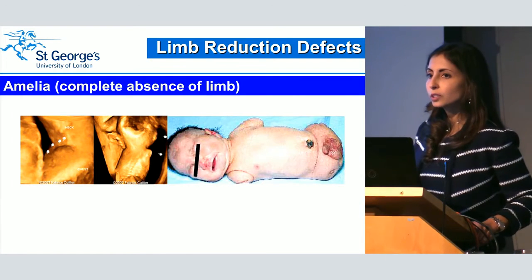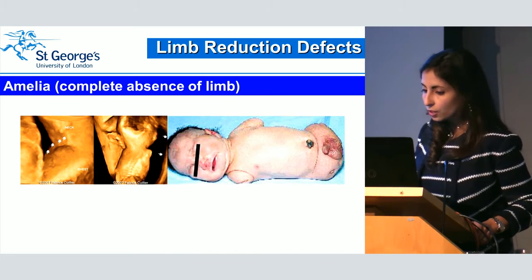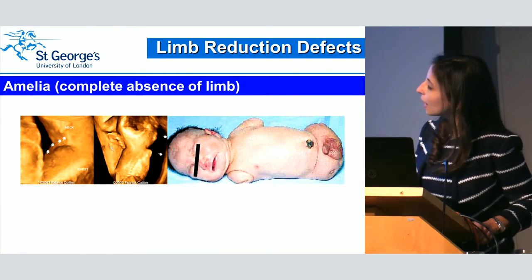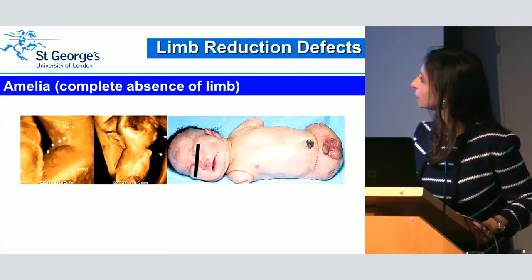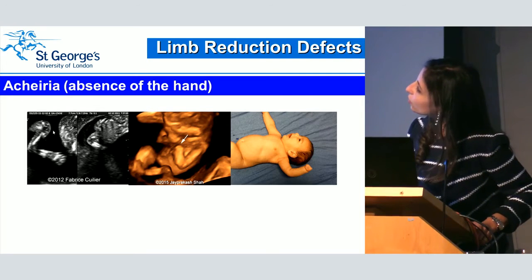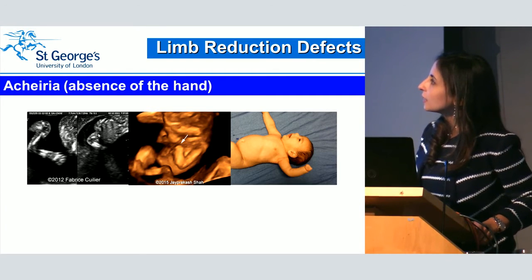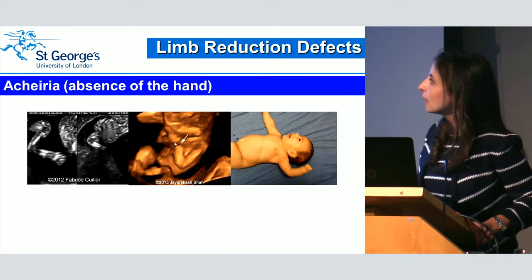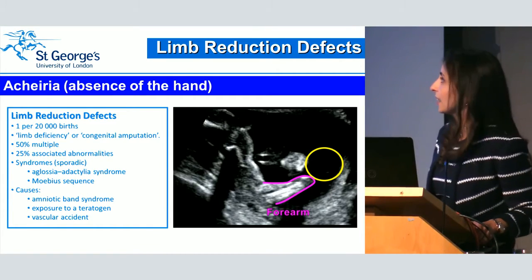Amelia is complete absence of the limb. It's quite rare — only case reports — and often isolated, not associated with syndromes. This is different from acheiria, which is absence of a hand. In 2D you can see one arm with humerus, radius, ulna, and hand on one side, but on the other side you see the humerus and radius/ulna with no hand. In the 3D image you can clearly see there's no hand. This is part of limb reduction defects, which is luckily rare at only 1 in 20,000. It has different names in the literature — limb deficiency or congenital amputation.